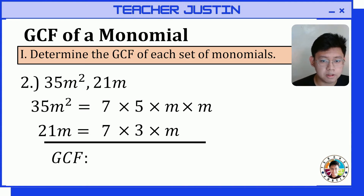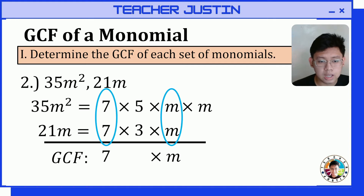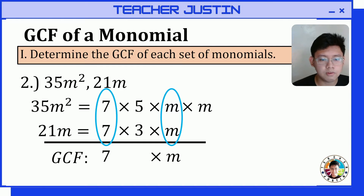Now that we have the prime factors, let's identify the common factors. The common factors are 7 and the variable m. To get the greatest common factor, we multiply them: 7 times m, which gives us the greatest common factor of 7m.